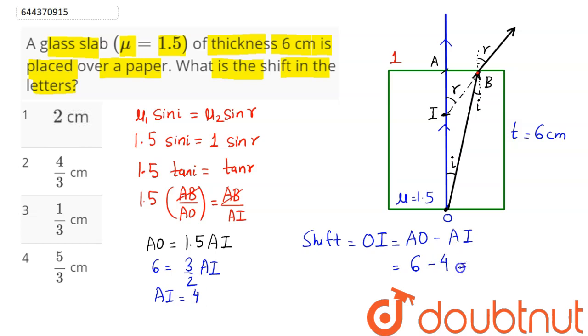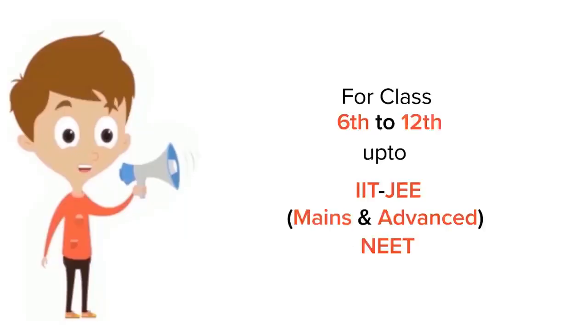So 6 minus 4, we can say, comes out to be 2 centimeters. So 2 centimeters means option number 1 is the correct answer. Hence 1 is our answer.